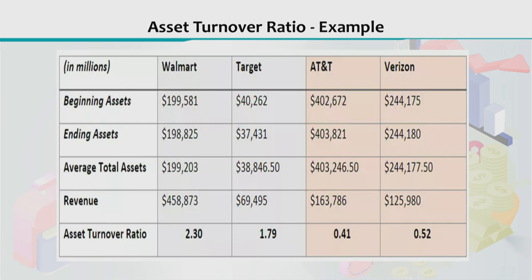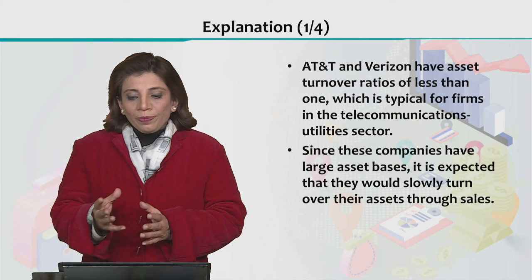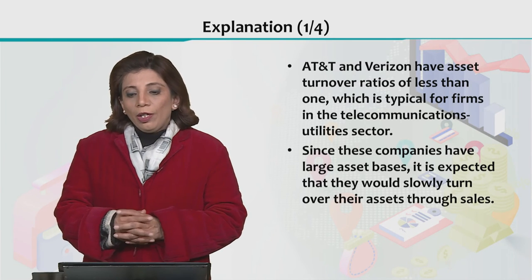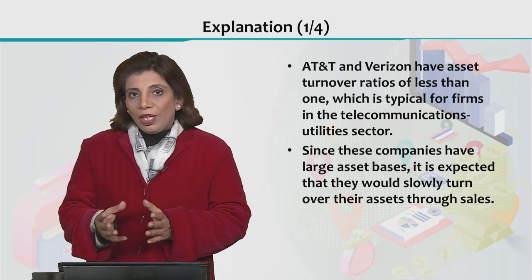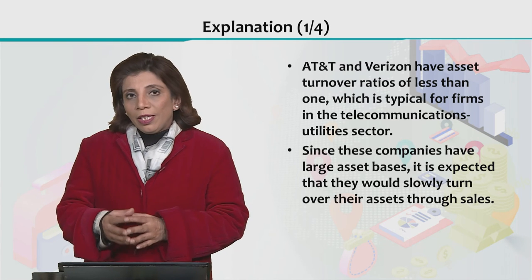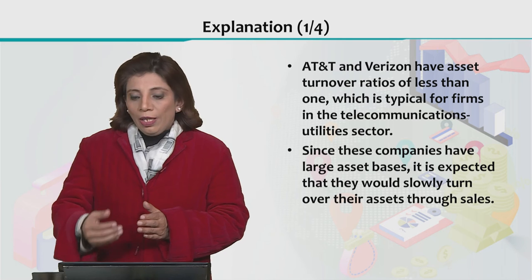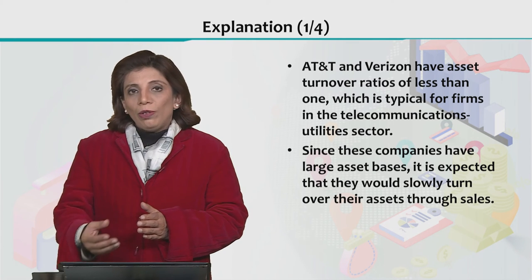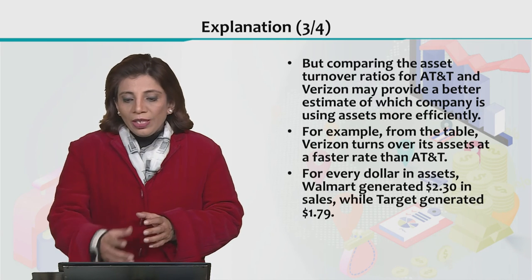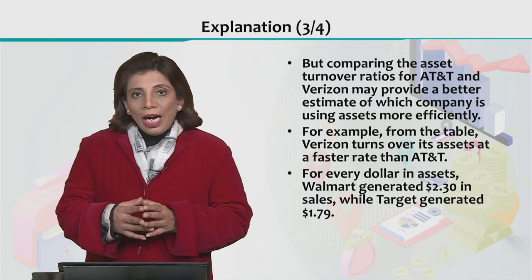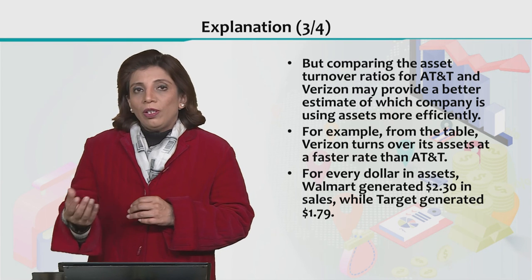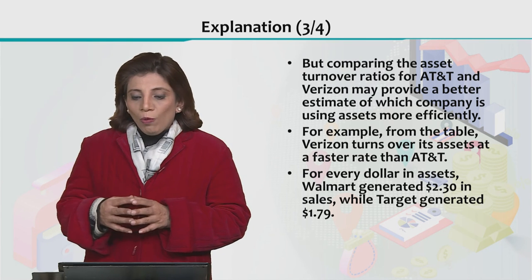Now let's understand what 2.30, 1.79, 0.41, and 0.52 mean across different sectors. AT&T and Verizon represent the telecommunications and utility sector, so their values are smaller than 1 because their total assets are very large. If you compare large-asset-base companies, you should compare them with other companies in the same sector using the asset turnover ratio. Looking at Walmart and Target, their values are larger than 1, showing they appear more efficient compared to AT&T and Verizon.